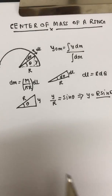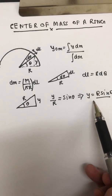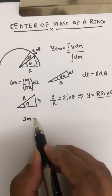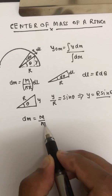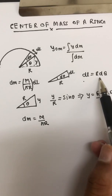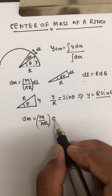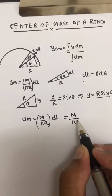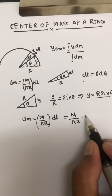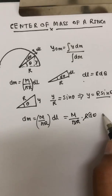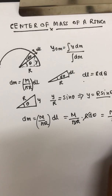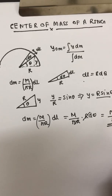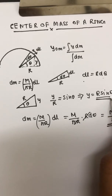Now substituting: in place of y I put r sinθ, and for dm I write m/(πr) · r dθ. The r and r cancel, giving dm = (m/π) dθ. So in the formula, in place of y I write r sinθ and in place of dm I write (m/π) dθ.